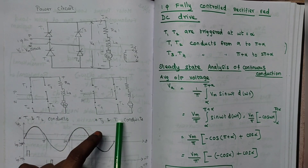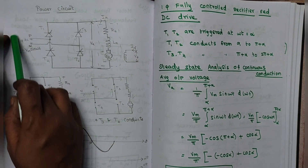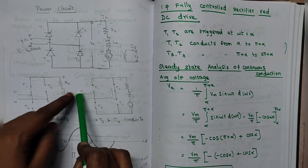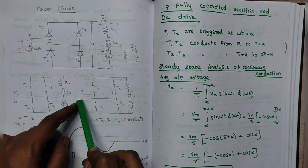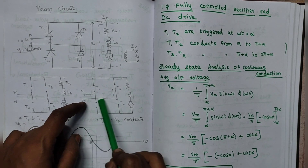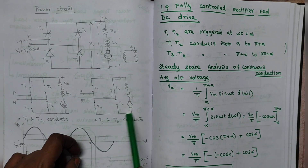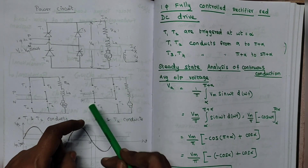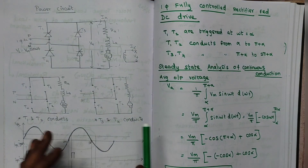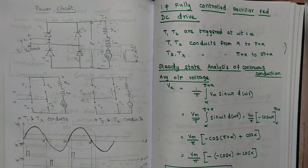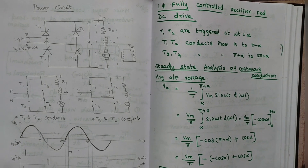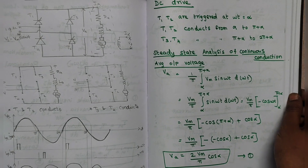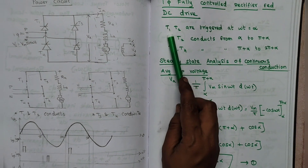During the negative half cycle — where polarity is negative then positive — current flows via T3, through the motor, to thyristor T4 and back to negative. So T3 and T4 are in conduction for the negative half cycle. Now we are going to see the waveform as well as the derivation, and the same thing is written here too.